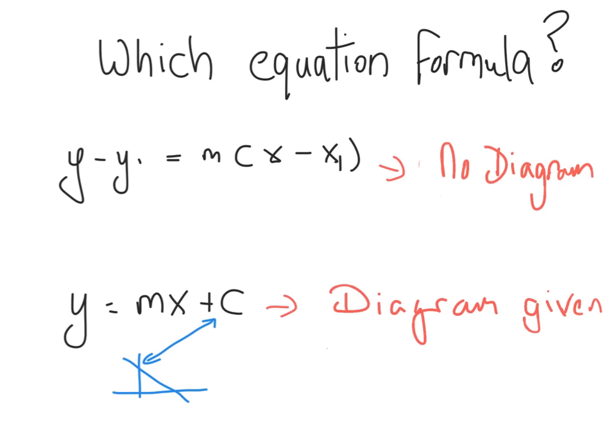In your log tables you get two equation formulas. The question is when should you use what formula? The first formula is y minus y1 equals m into x minus x1. The fact is you can use this formula for getting the equation of the line in every situation — it works for all situations.